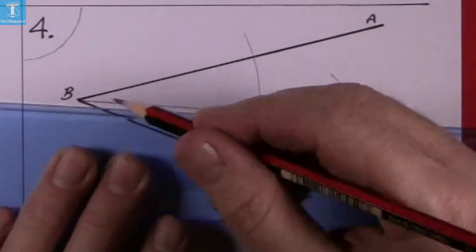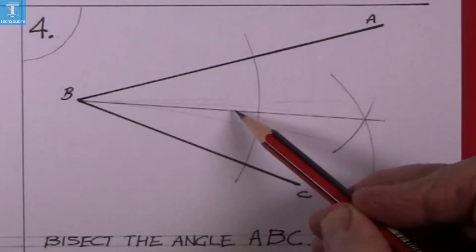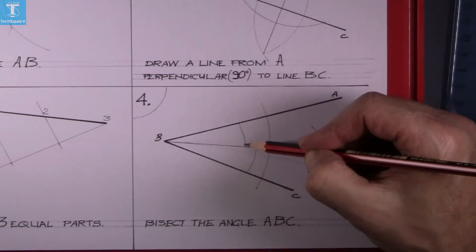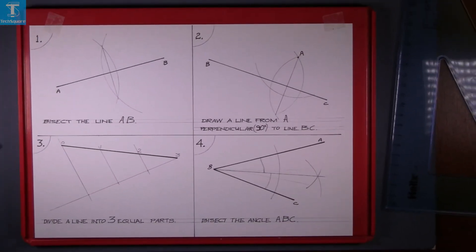And that's the bisector of the angle. This angle here now is equal to this angle here. And that's your four geometry constructions done.